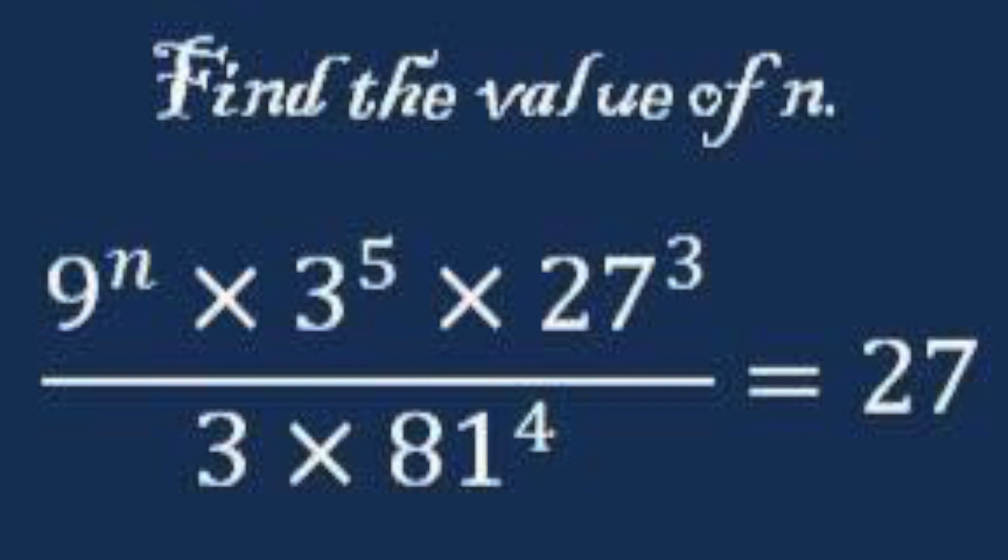All right, give this one a shot. This is a good practice one for exponentials. We got 9 to the n power. We're trying to find n times 3 to the 5 times 27 to the 3rd power divided by 3 times 81 to the 4th power equals 27. You got to find n. You could pause it, try it on your own, and then we'll do it right now.